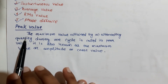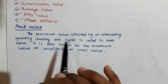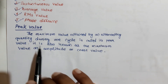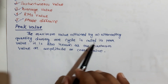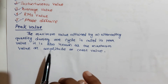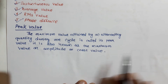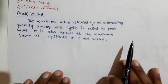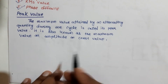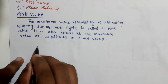First, we discuss peak value. It is defined as the maximum value attained by an alternating quantity during one cycle, and is called the peak value. It is also known as the maximum value, amplitude, or crest value.